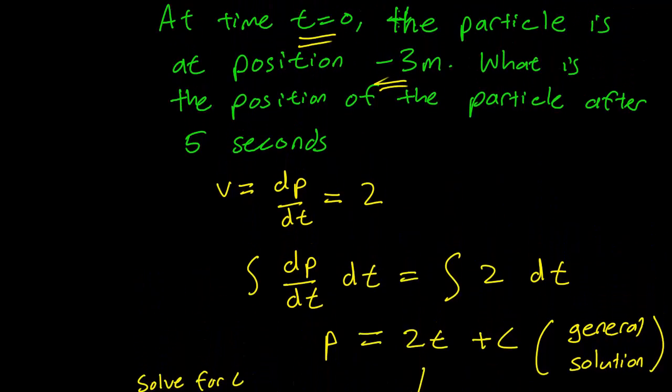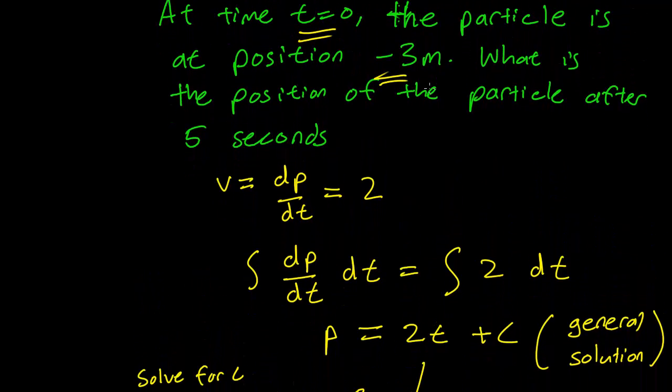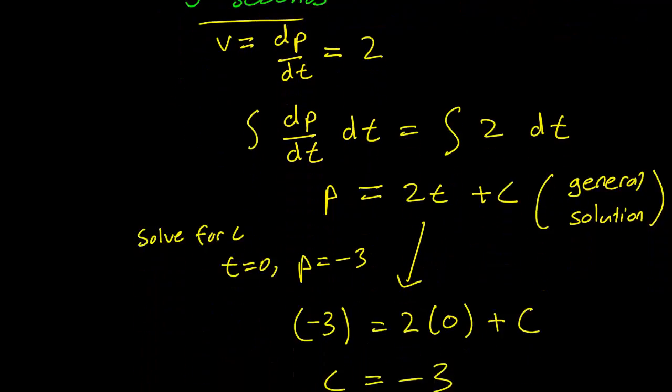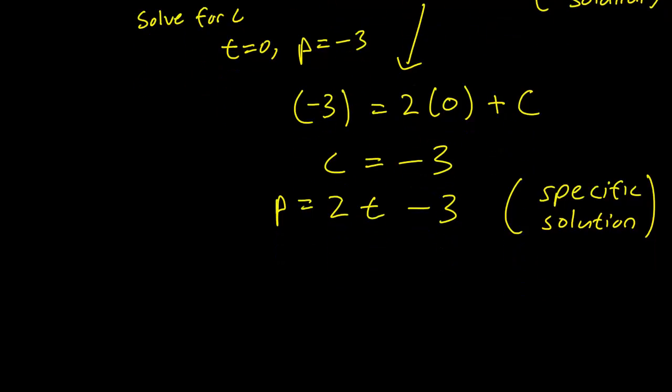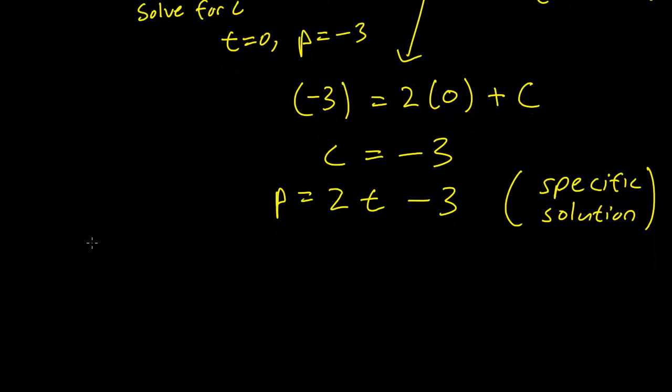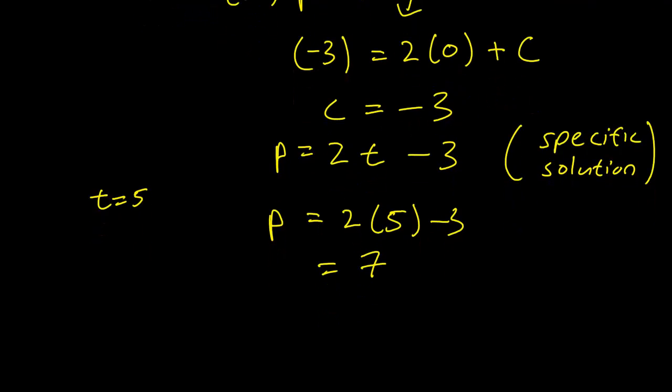We want now to answer the problem. What is the position of the particle after 5 seconds? So we have a position function of the particle, and at t equals 5 seconds, we find that p is equal to 2 times 5 minus 3 equals 7. So the position of the particle after 5 seconds is 7 meters. And that concludes our example.